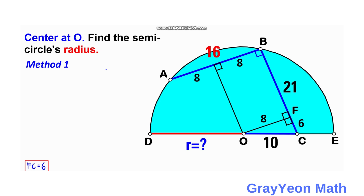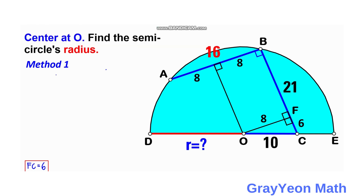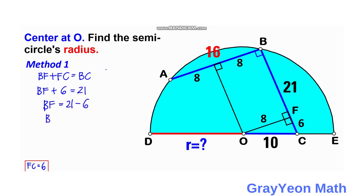Next we focus on segment BC. BC is composed of BF plus FC. BF plus FC equals BC, and BC is given to be 21. So BF equals 21 minus 6. Therefore BF equals 15 units.